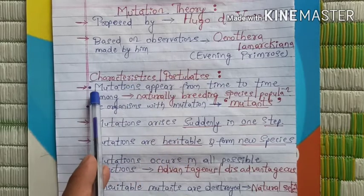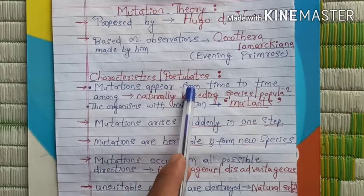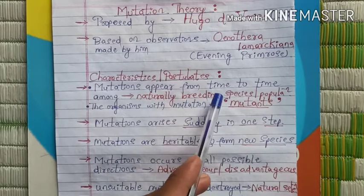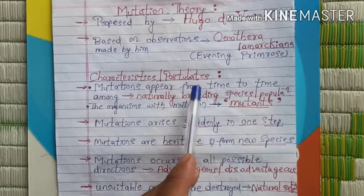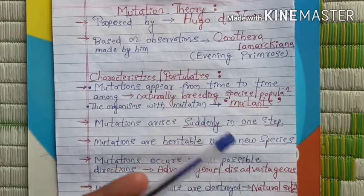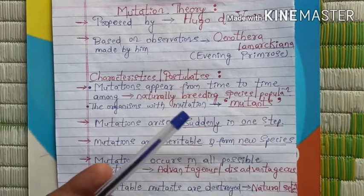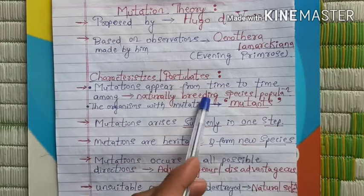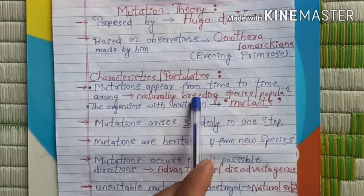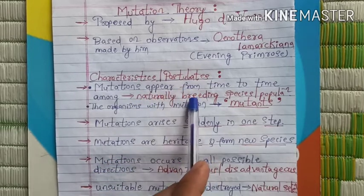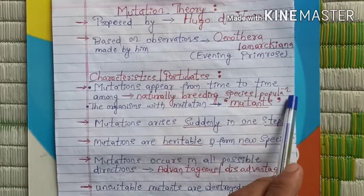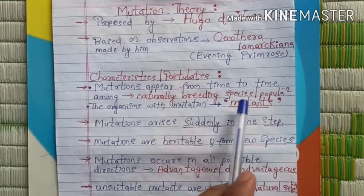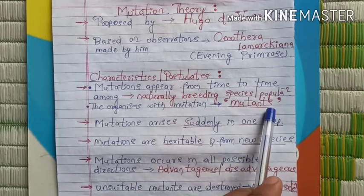The first important characteristic is that mutations appear from time to time among naturally breeding populations or species. So mutations can appear from time to time — that means changes occur in naturally reproducing species or populations. The organisms with mutations are called mutants.